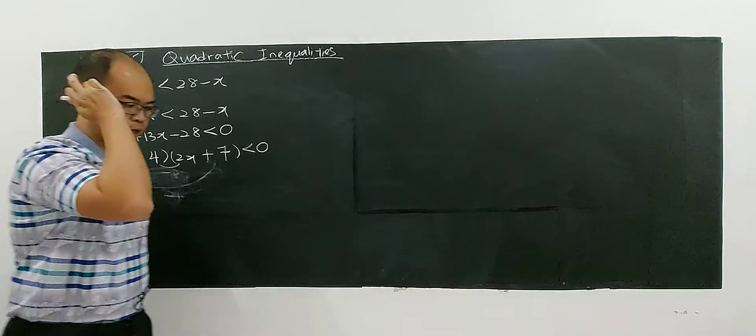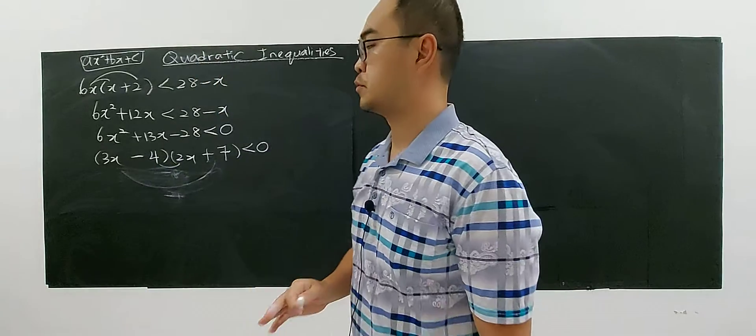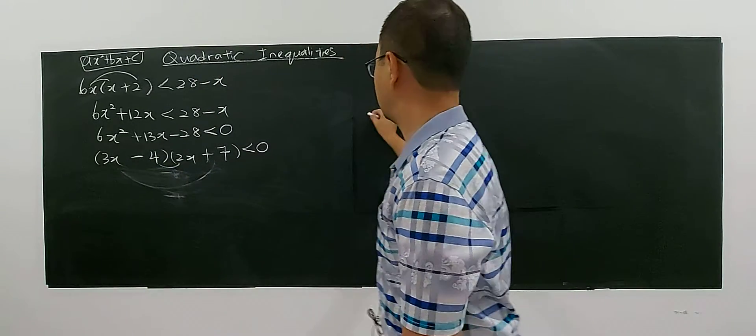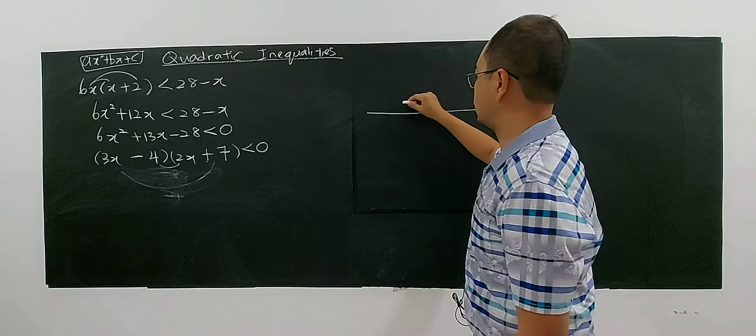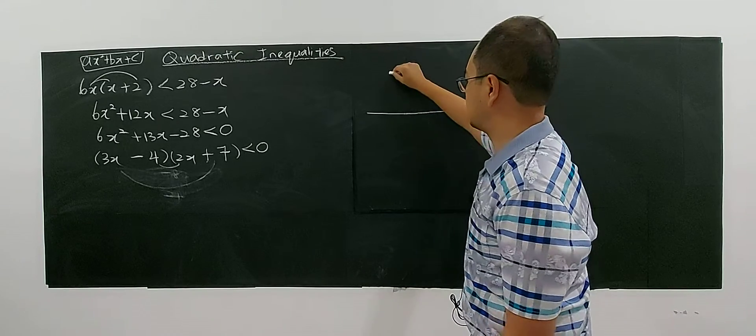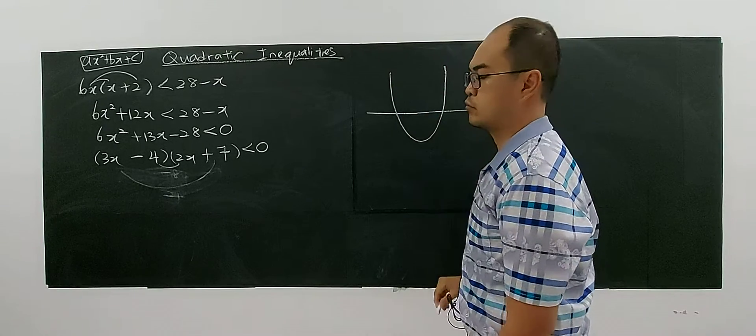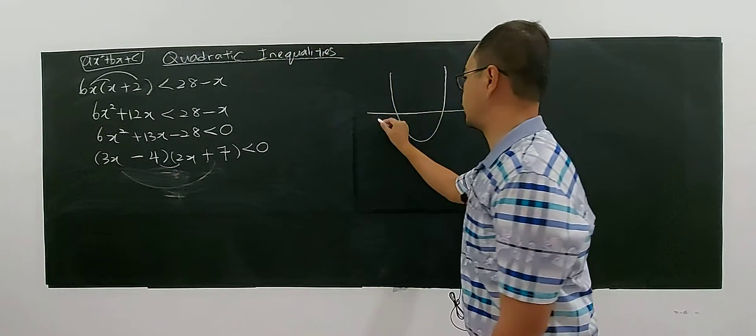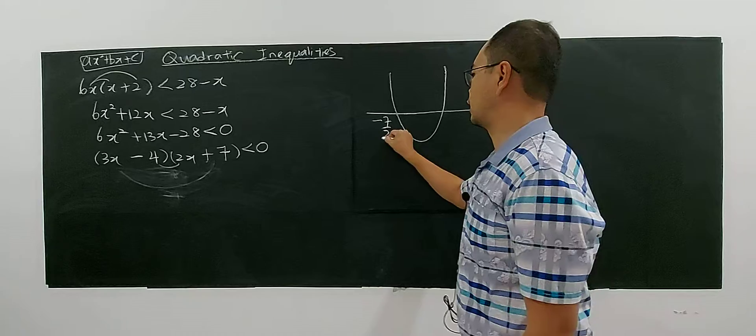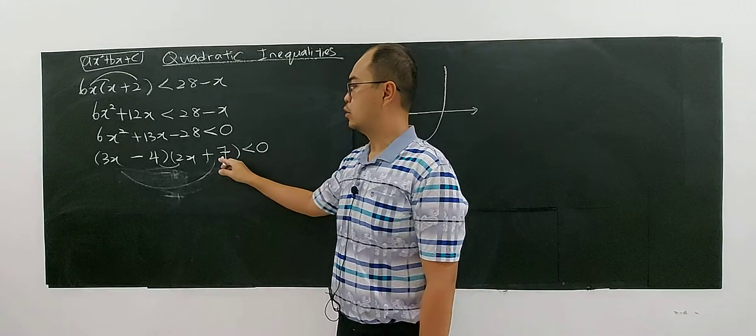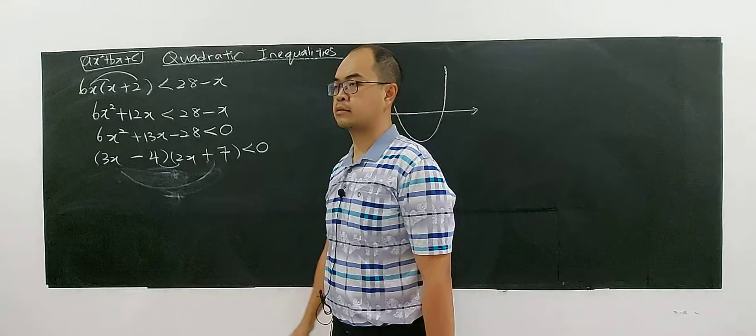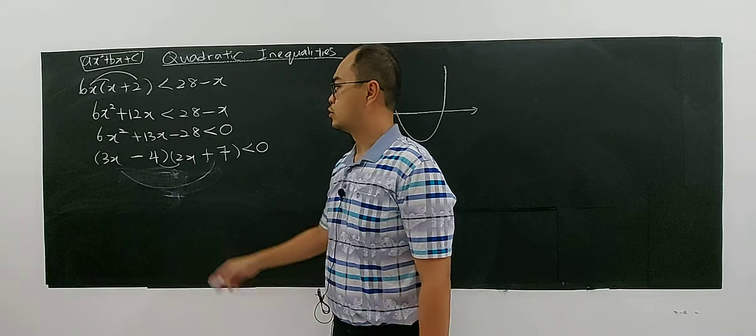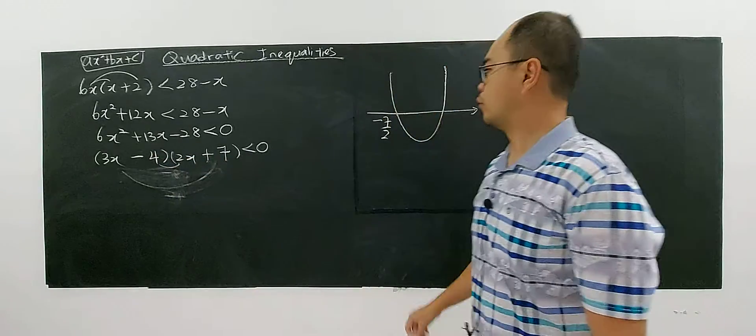Now you're using the graphical approach for solving quadratic inequality. This is your x-axis. You have the values here: 4 over 3 and negative 7 over 2. Once you take this equals 0, you will get x equals negative 7 over 2 and x equals 4 over 3.